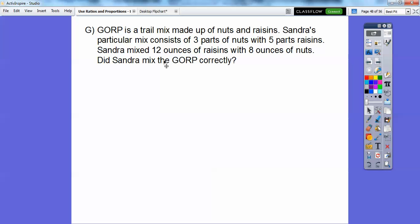So Sander mixes 12 ounces of raisins and eight ounces of nuts. Did Sander mix the gorp correctly? Okay, now this three goes for the nuts. So if we put this in the numerator, three over five, then the nuts have to go in the top and the raisins have to go in the bottom. So we just have to be consistent.